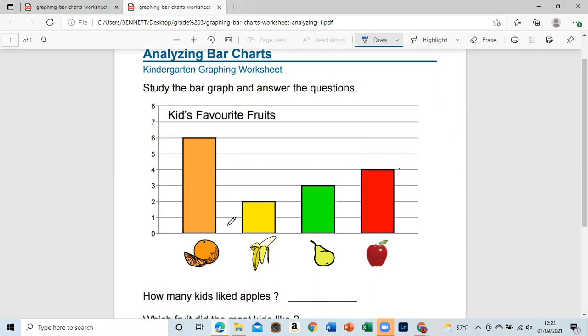So basically, as you can see, it says kids' favorite fruits. And here we have the fruits: orange, banana, pear, and apple.